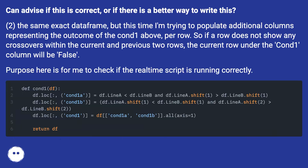Second question: using the same exact dataframe, I'm trying to populate additional columns representing the outcome of condition 1 (con1) above, per row. So if a row does not show any crossovers within the current and previous two rows, the current row under the con1 column will be false. The purpose is for me to check if the real-time script is running correctly.